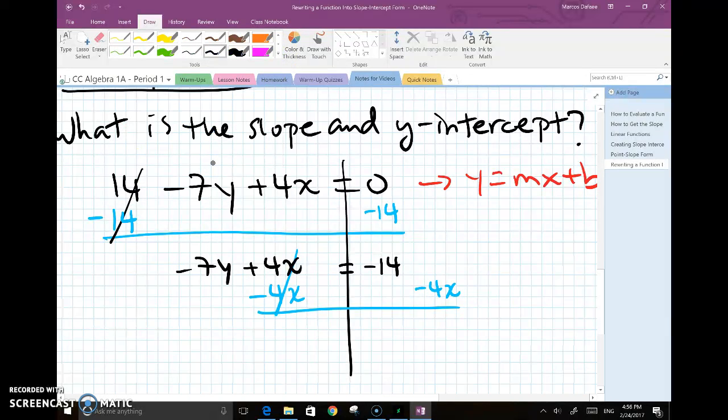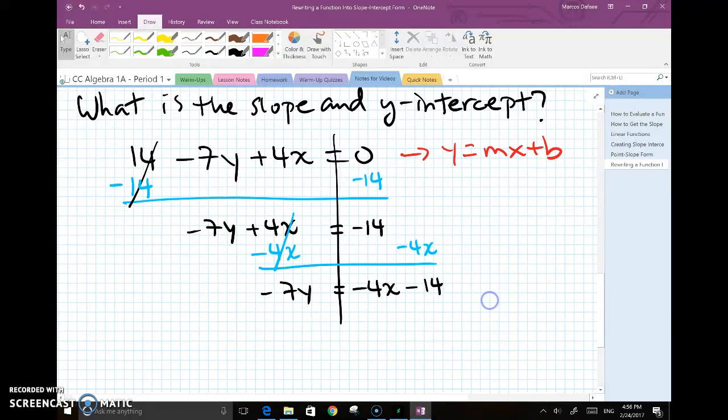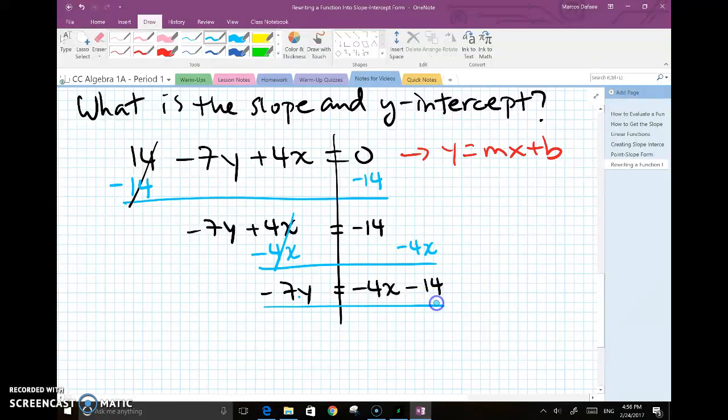And I bring down everything left over. So negative 7y is left over. On the right side, I'm going to put my x term first, so negative 4x, followed by my negative 14, which is minus 14. And then I get rid of my negative 7. So this negative 7 here is multiplying with the y. So the inverse of multiplication is division. And I will divide by negative 7 because that's what I have here, here, and here.